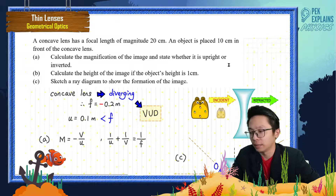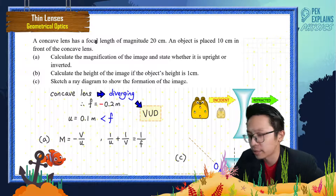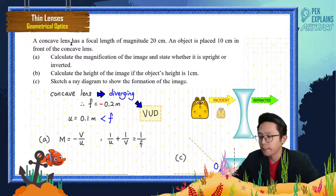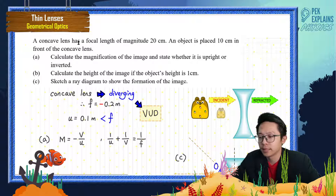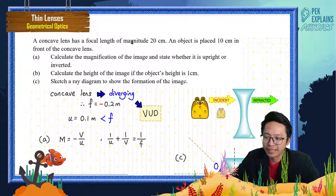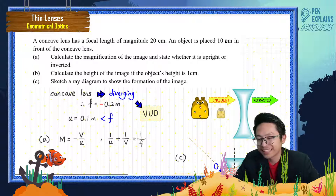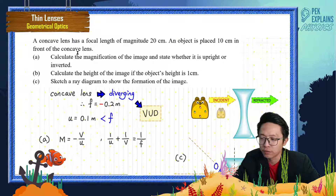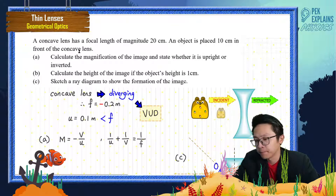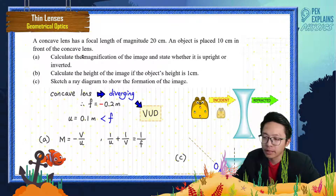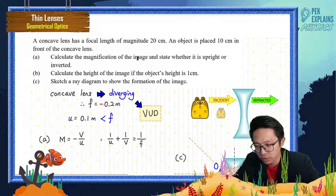Let us look at this question. A concave lens has a focal length of magnitude 20 cm. An object is placed 10 cm in front of the concave lens. Calculate the magnification of the image.